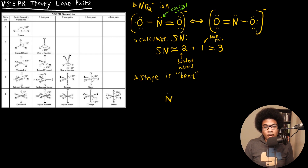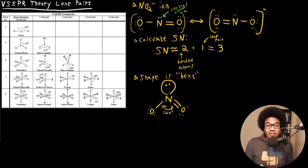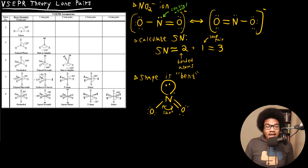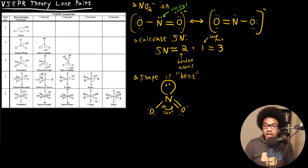To draw the bent geometry, I'll draw the lone pair as a lobe showing it takes up real space, and then one oxygen down on each side with their lone pairs — giving a 120-degree angle. That lone pair takes the place of a bonded atom, and we end up with a bent geometry for NO2⁻. I suggest finding this VSEPR theory table online or using one you're comfortable with during practice problems and homework to help you identify three-dimensional structures.